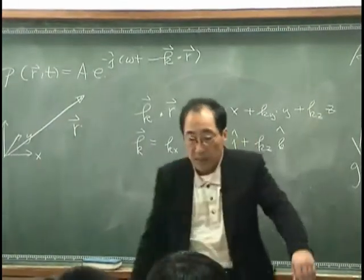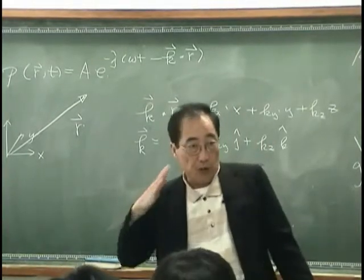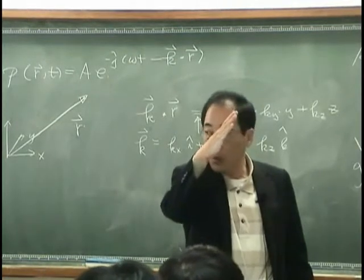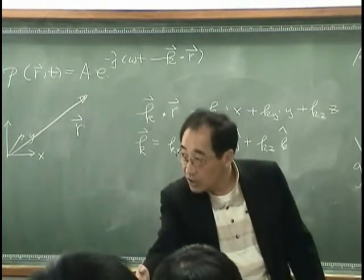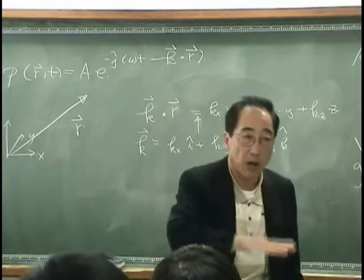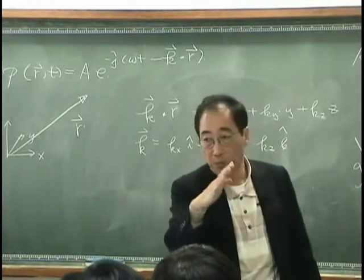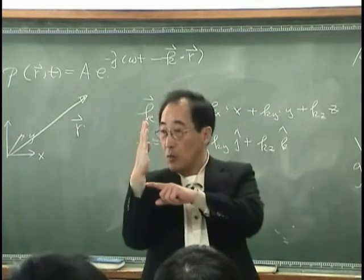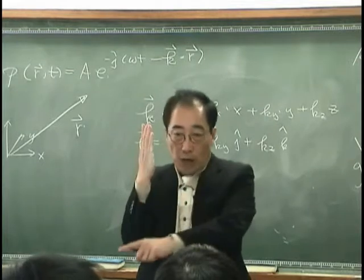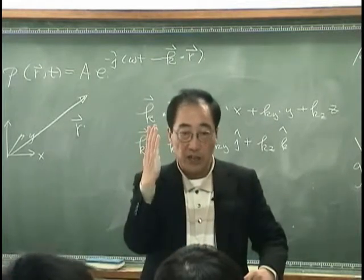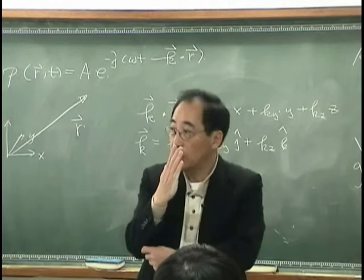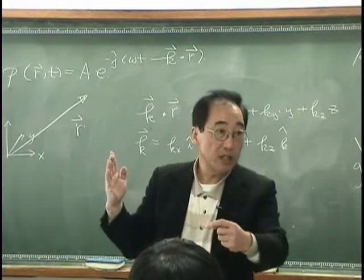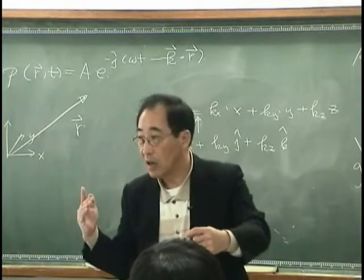That means, if I have a wave vector K like this, it tells me how much component I have in the X direction, how much in the Y direction, and how much in the Z direction — how much wave propagated per unit length in space. That is the K vector.